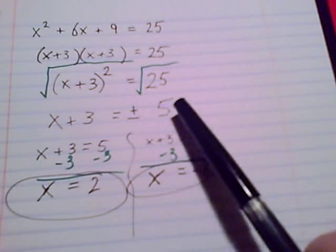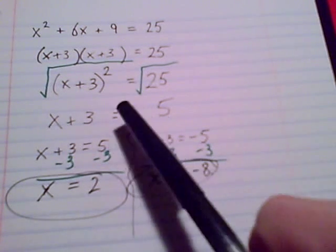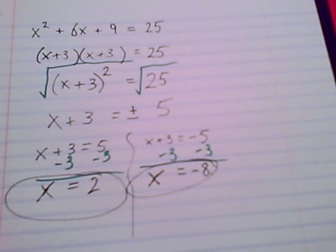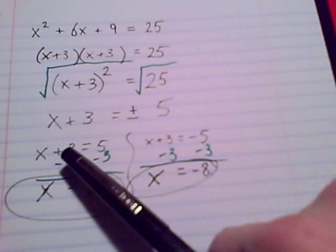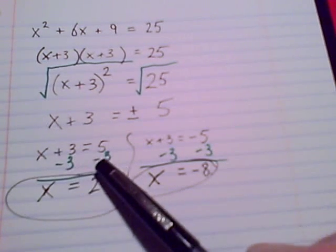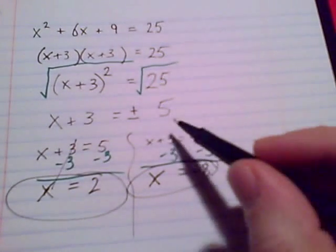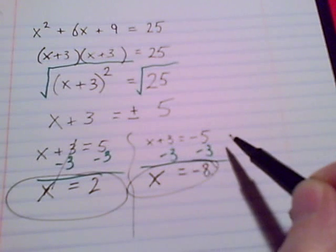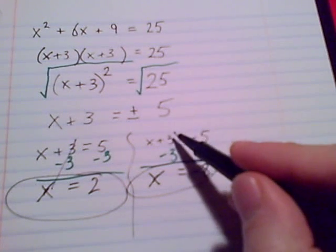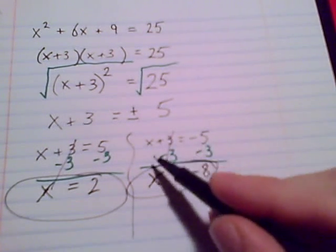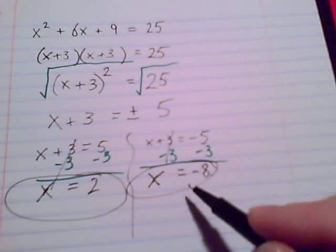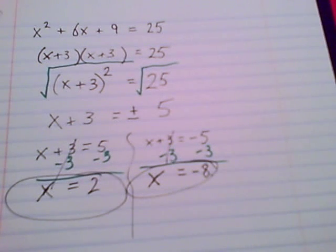And once we had our square root of 25 turned into a positive or negative 5, right away I went for the two different equations. x plus 3 equals 5, solve that, take away 3 both sides, x equals 2, those guys canceled. This other equation, x plus 3 equals the negative 5, I had to take away 3 again, actually cancel, and x equals negative 8. And those are our two solutions.